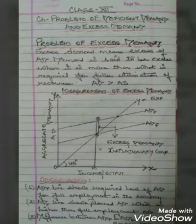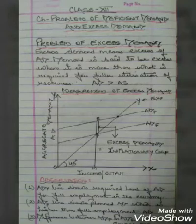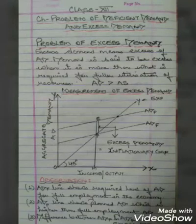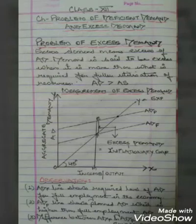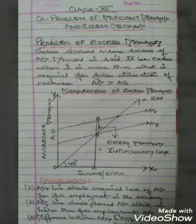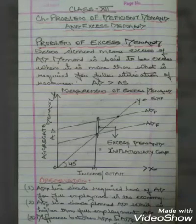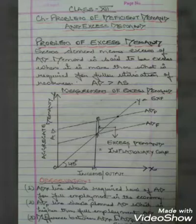Excess demand means excess of AD. Demand is said to be excess when it is more than what is required for fuller utilization of resources, where we say that AD is greater than AS.